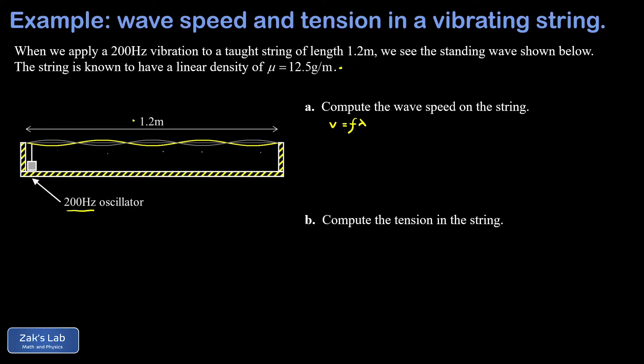I can just look at the picture here and see how many wavelengths there are in 1.2 meters. There's one complete wavelength, two complete wavelengths and a half, so I have two and a half wavelengths. 2.5 lambda is equal to my total distance of 1.2 meters. I solve for lambda and I get 0.48 meters for the wavelength.